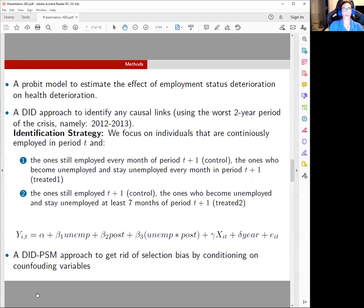Treatment one corresponds to the group of individuals that have been continuously employed during 2012, but then lose their jobs and stay unemployed for all 12 months of the following year. Treatment two corresponds to the group of individuals that have been continuously employed during 2012, but then lost their jobs and stayed unemployed at least seven months of the following year. The second group aims to control for the individuals who have seasonal contracts.